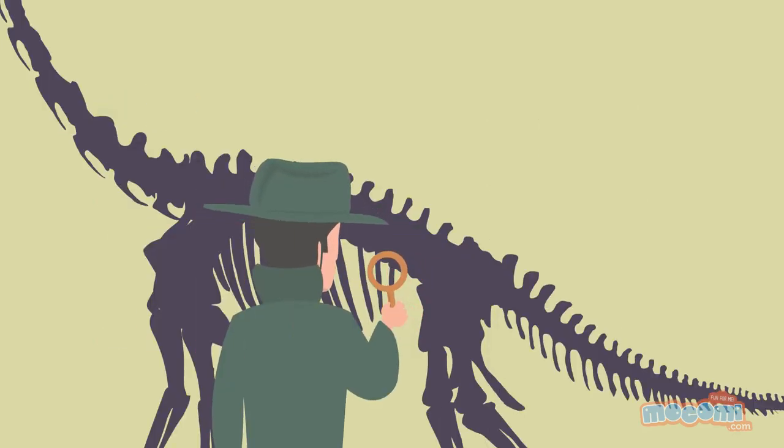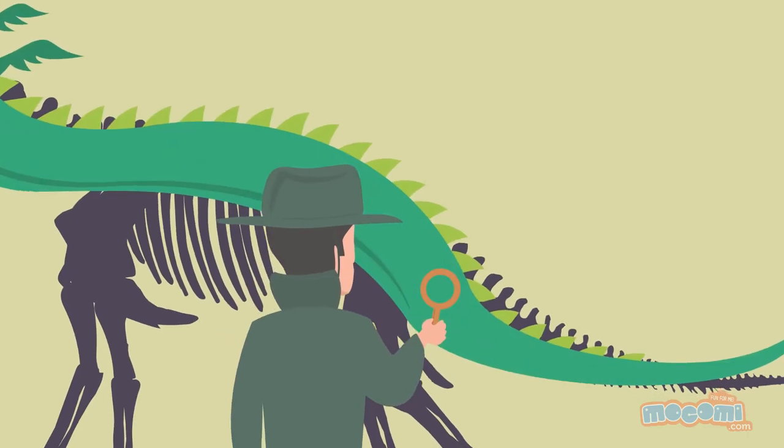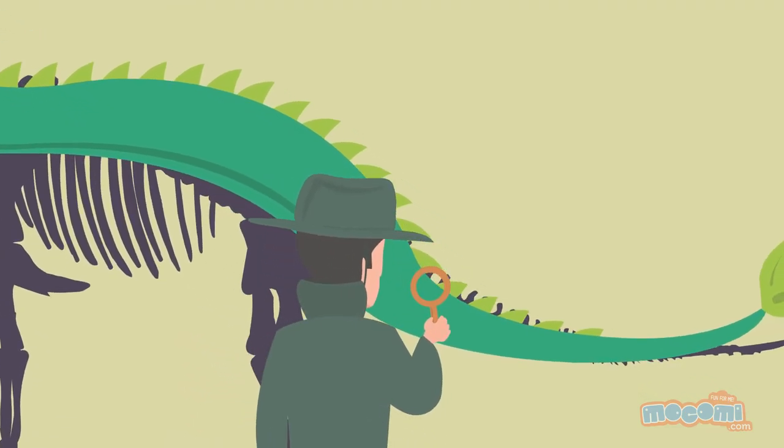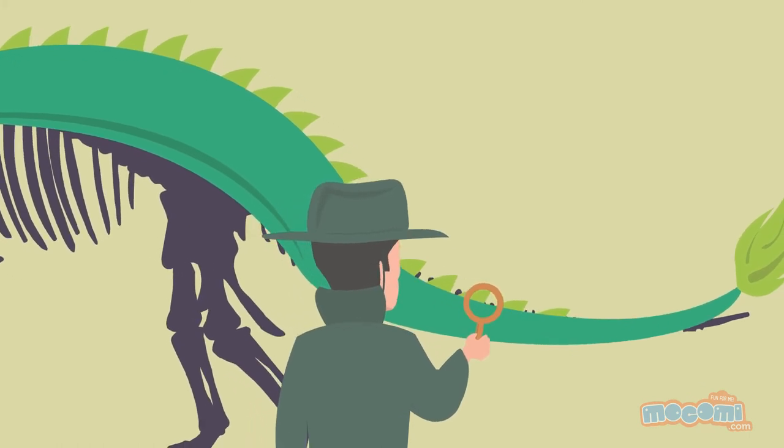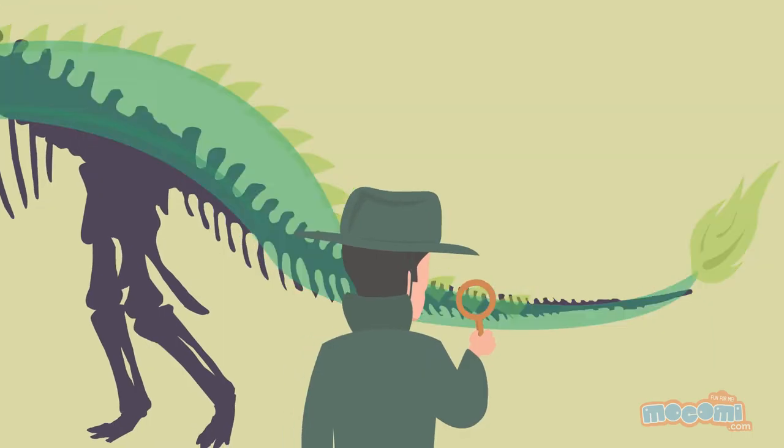Has there been proof that dragons existed? Well, ancient people may have discovered dinosaur fossils and understandably misinterpreted them as the remains of dragons. Changku, a Chinese historian from the 4th century BC, mislabeled such a fossil and gave credibility to the myth of dragons.